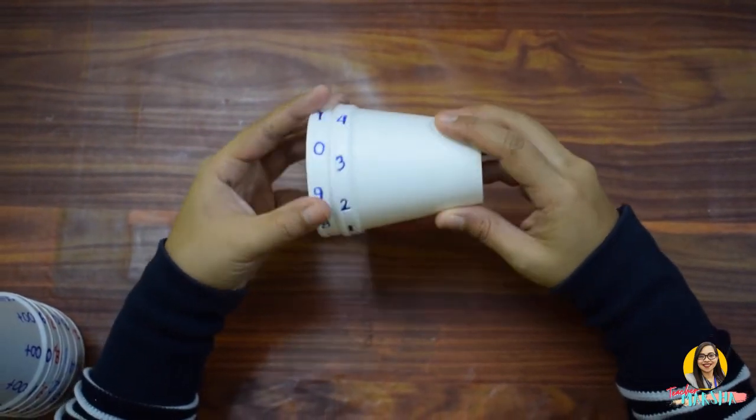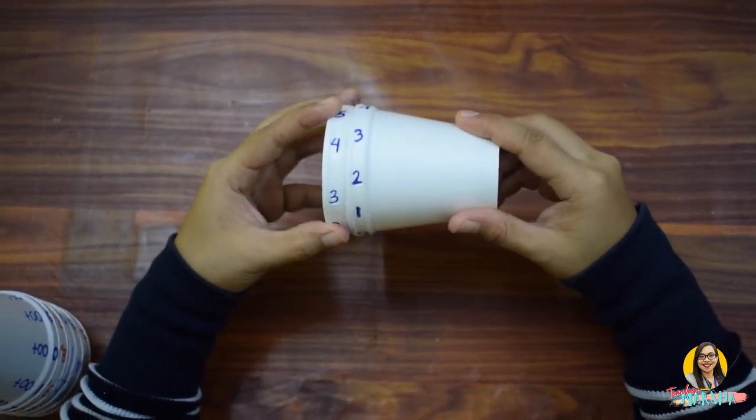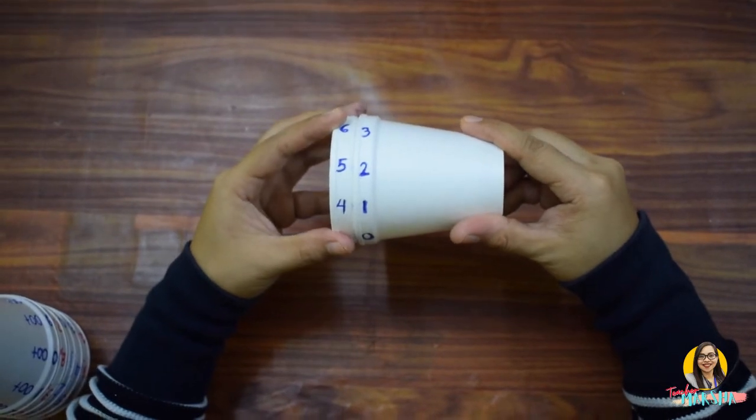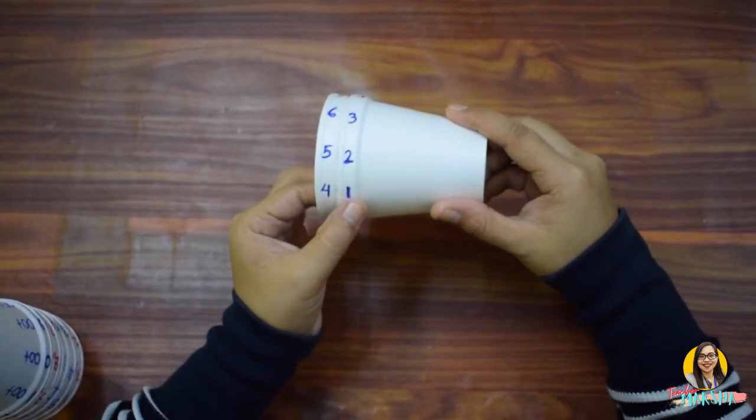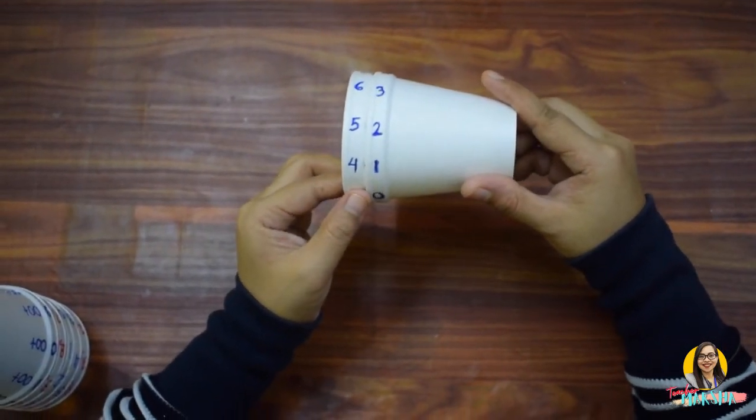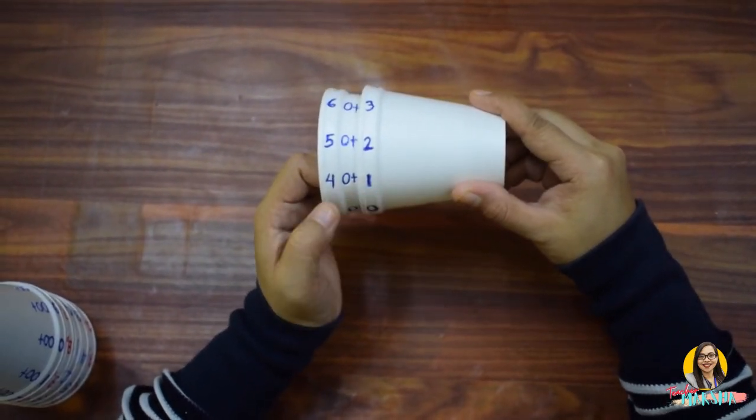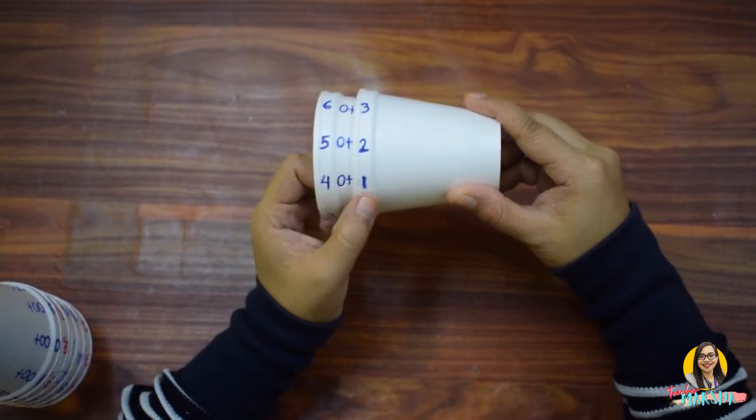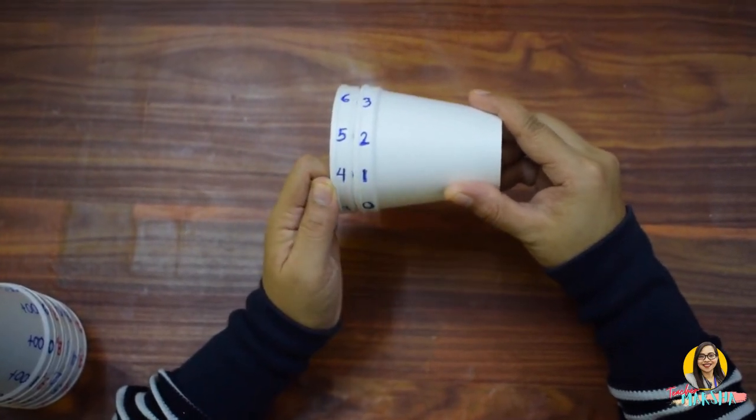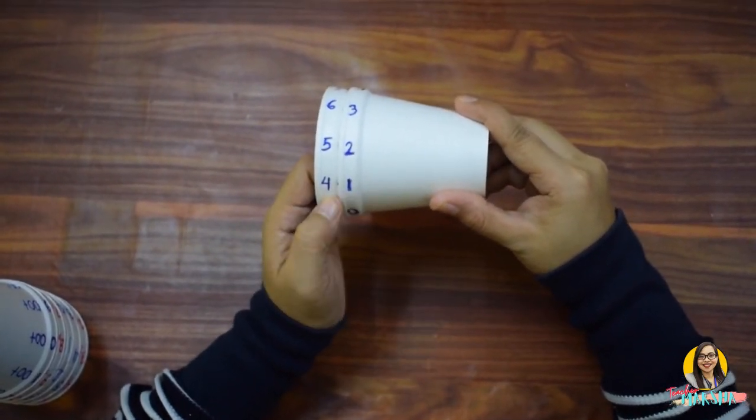Let's try it one more time. Select a pair of numbers. So, I have 4 and 1. Show your kid the value of each digit. The value of 4 is 40 while the value of 1 is 1. So, 40 plus 1 is equal to 41. So, you read this number as 41.